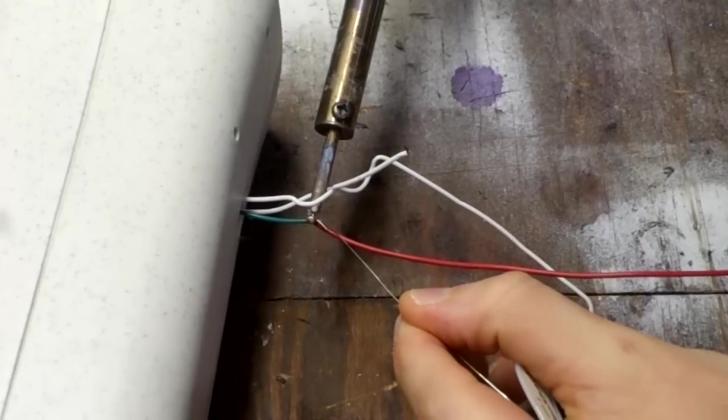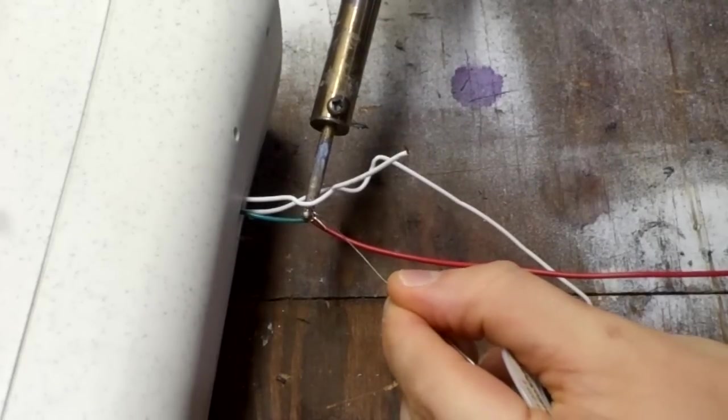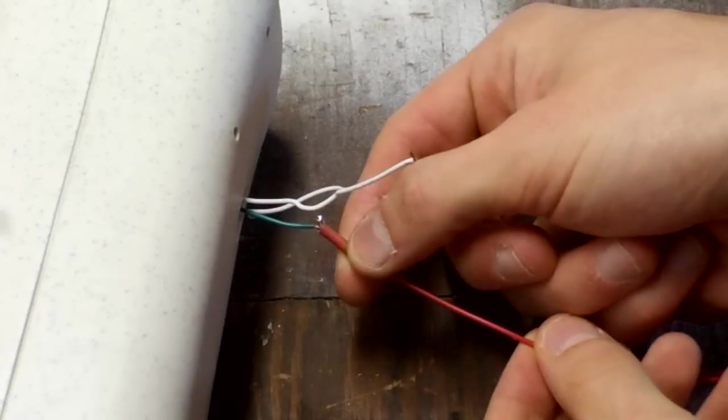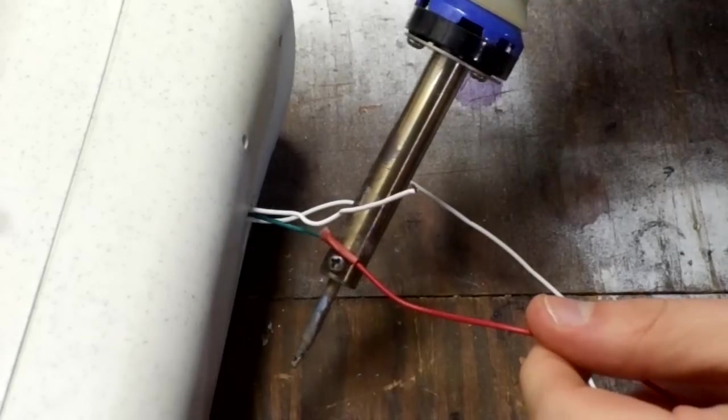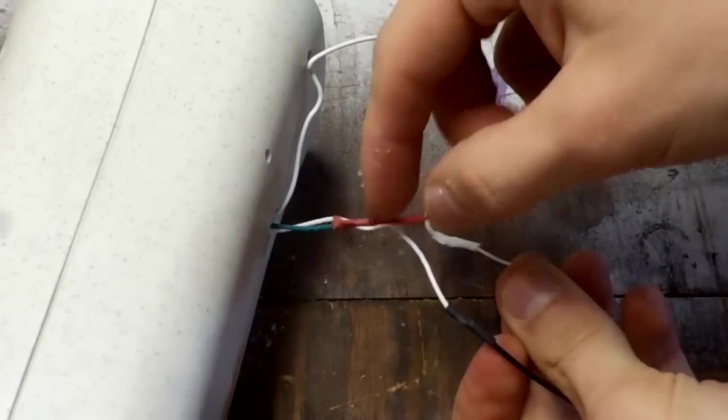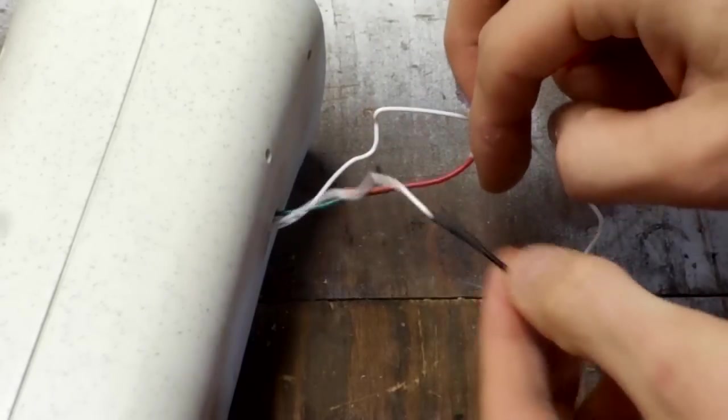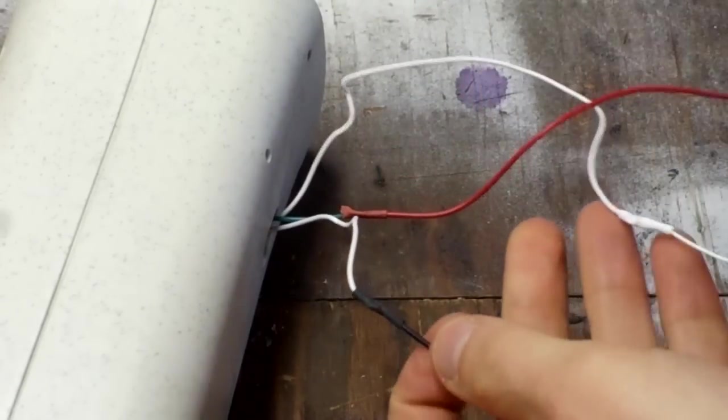Next I soldered some longer wires onto these to make them easier to use. I used some heat shrink tubing to protect them. Now I've got a red power wire, black ground wire, and a white switch wire.